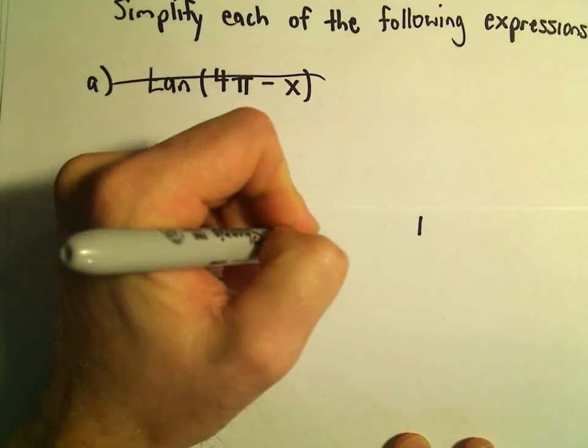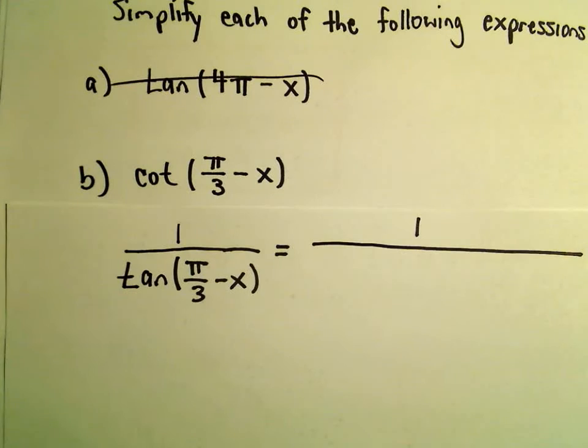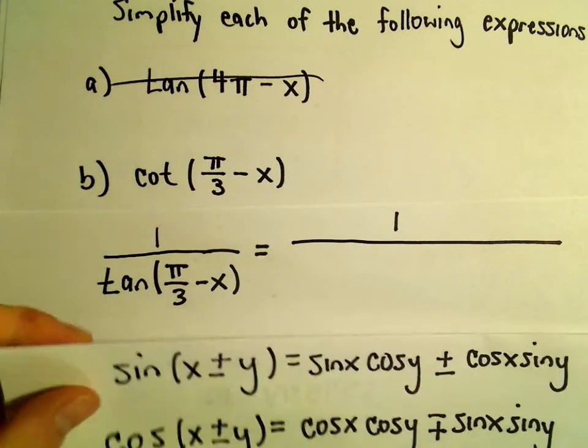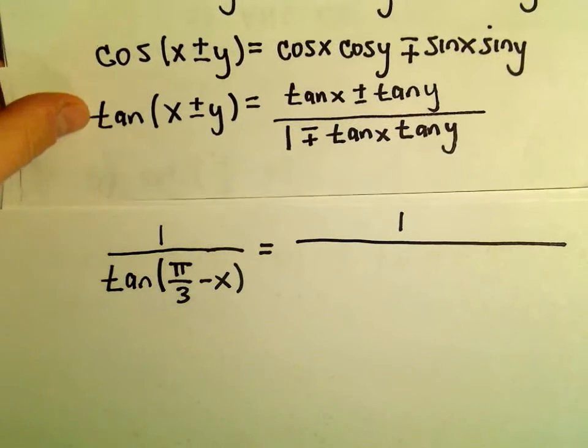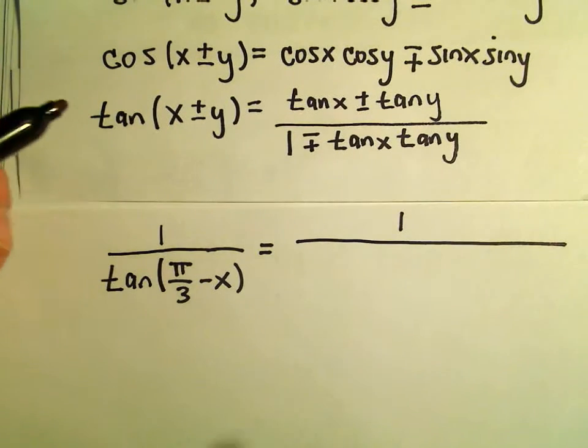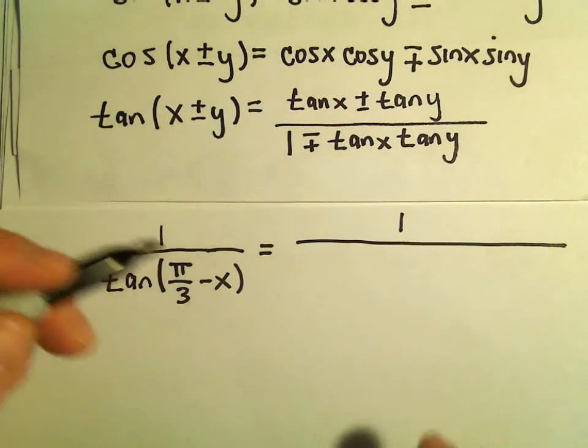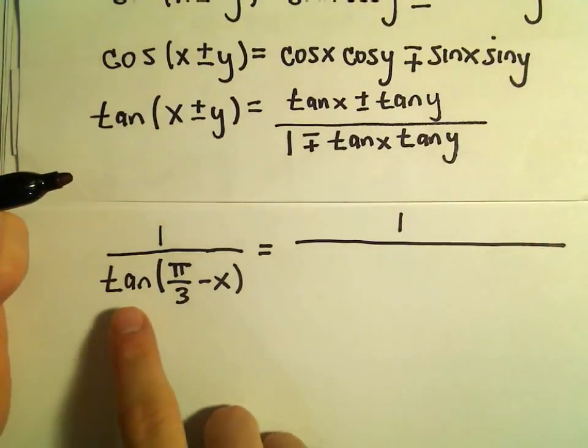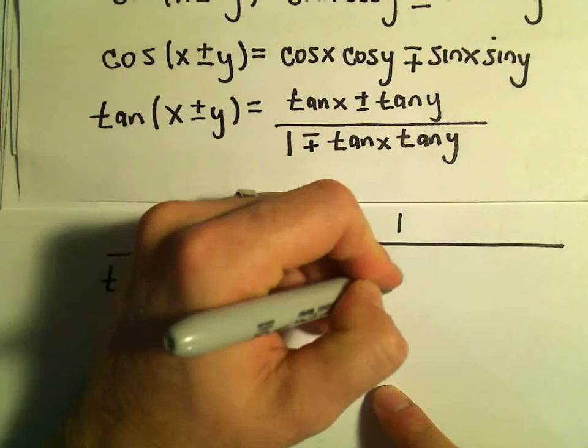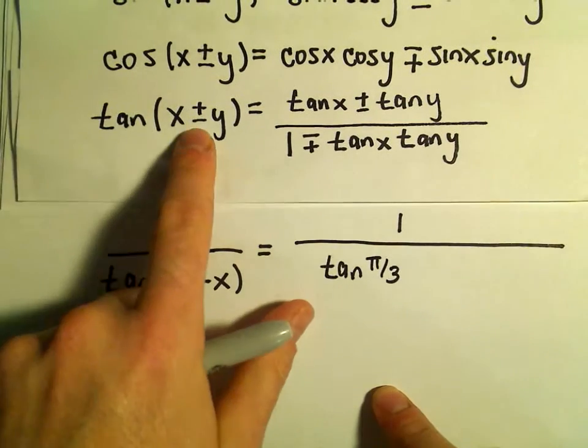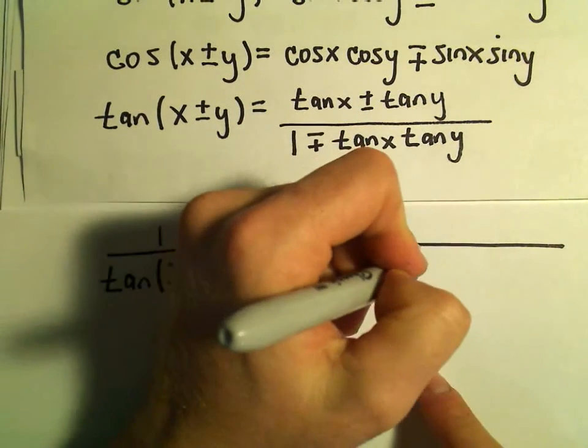Now we can use our identity for tangent. We're going to get a fraction in the denominator. We get tangent of π/3 minus tangent of x.